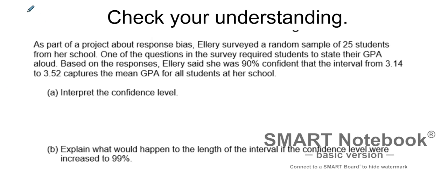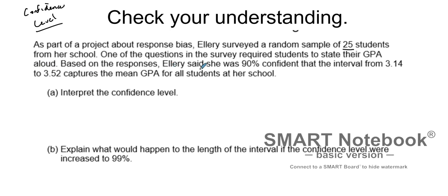We're going to talk about confidence level and hopefully be able to know the difference between confidence interval. As part of a school project about response bias, Ellery surveyed a random sample of 25 students from a high school. One of the questions required students to state their GPA out loud. Based on the responses, she was 90% confident that the interval from 3.14 to 3.52 captures the mean GPA for all students at her high school.